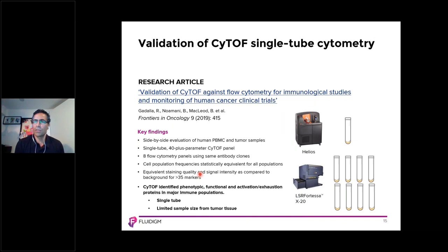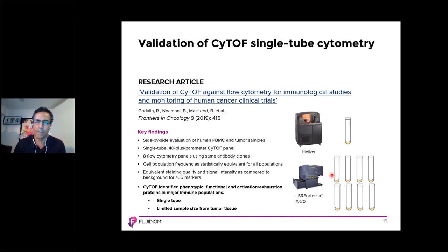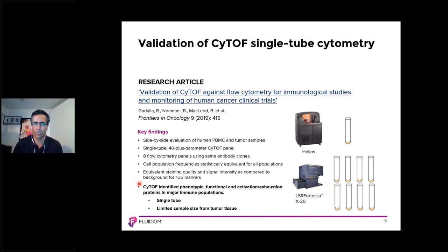In another publication, the authors discussed the use of mass cytometry as a potential readout in clinical research. They compared a single-tube 40-marker mass cytometry panel with a multi-tube eight-color flow cytometry workflow on human PBMCs and dissociated tumors. Their key findings showed statistical congruence in populations using both approaches, with comparable staining quality and signal intensities. The authors emphasized mass cytometry's ability to identify phenotypic, functional, and exhaustion markers in a unique manner, and pointed to its superiority in the discovery of new biomarkers from limited precious samples such as tumor biopsies.